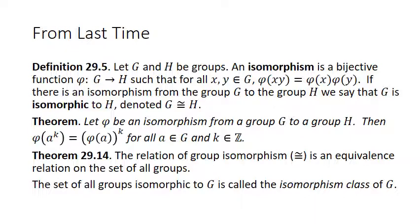Let's review a few of the important things we learned last time. The most important thing in Investigation 29 was the definition of isomorphism. Let H and G be groups. An isomorphism is a bijective function phi from G to H such that for all x and y in G, phi of x times y equals phi of x times phi of y. That equation is said to preserve the group operation — you can do the operation first and then the function, or the function first and then the operation, in either order. If there is an isomorphism from G to H, we say G is isomorphic to H.